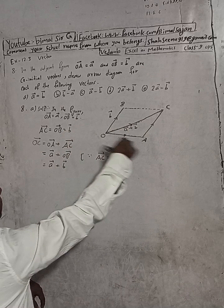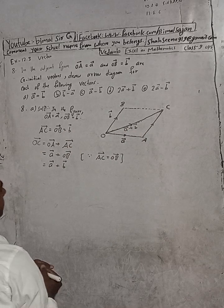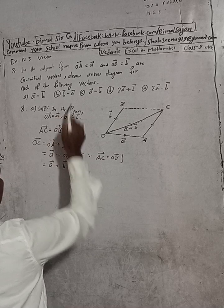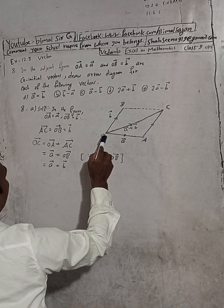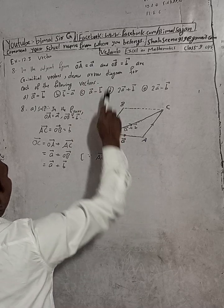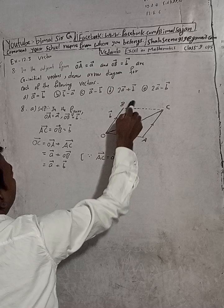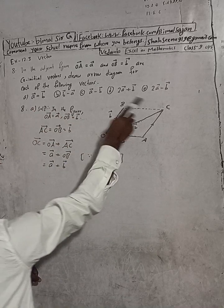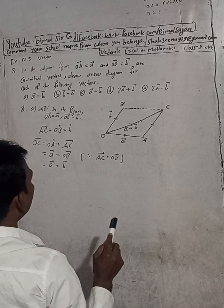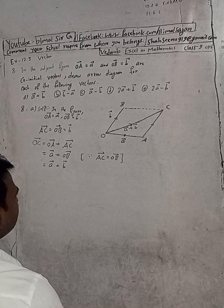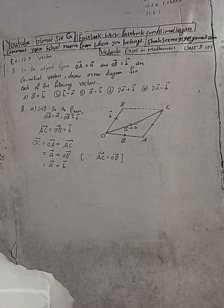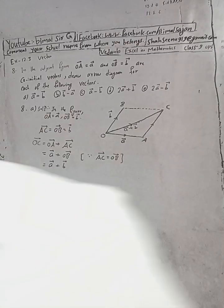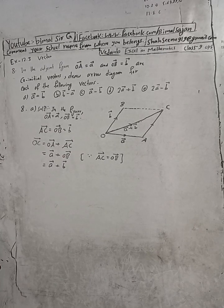Here in the solution, we draw this type of figure and complete the parallelogram with dotted lines. From the initial point, we indicate OA vector as A vector and OB vector as B vector. Then we indicate the A plus B vector in this diagram with an arrow, which is the diagonal OC vector.